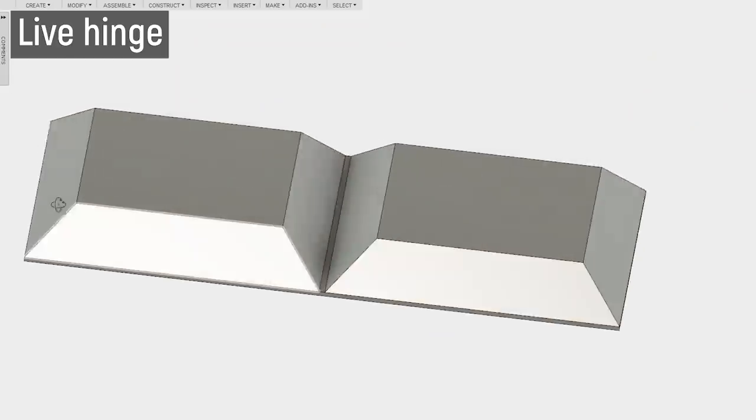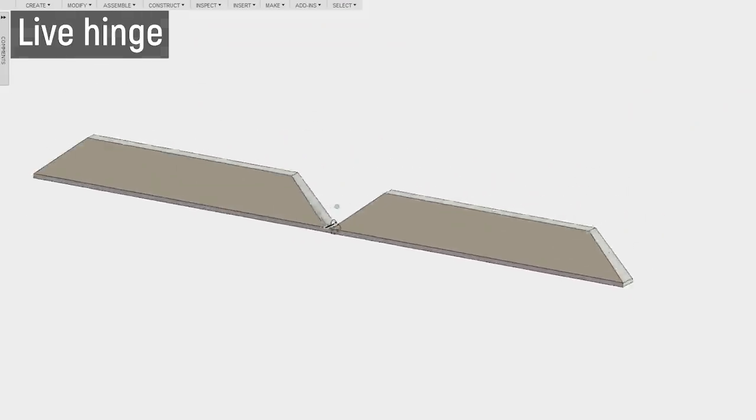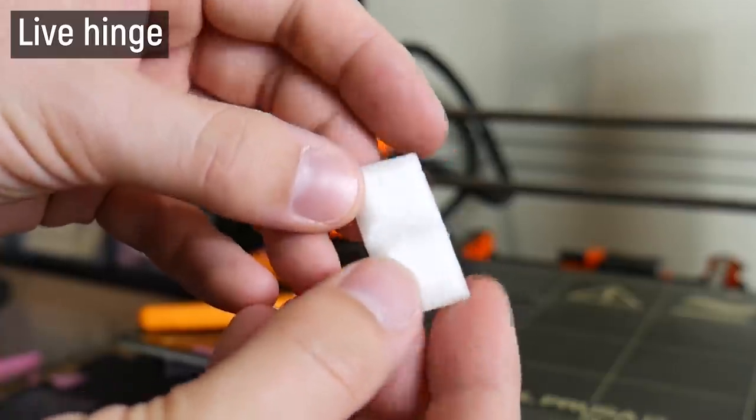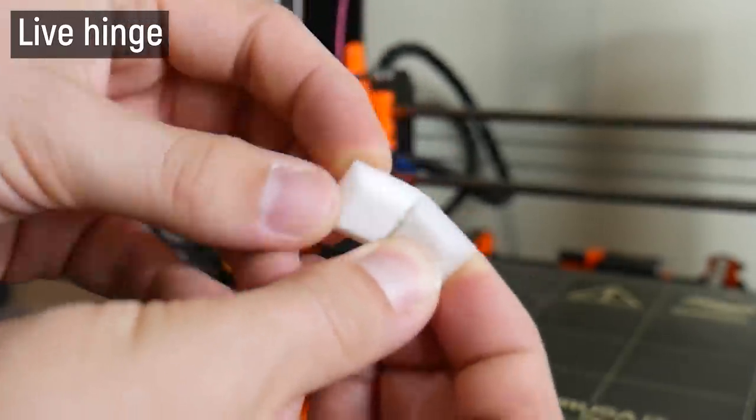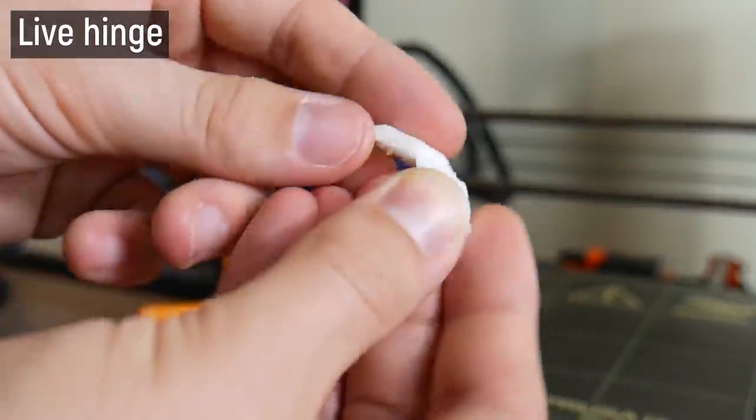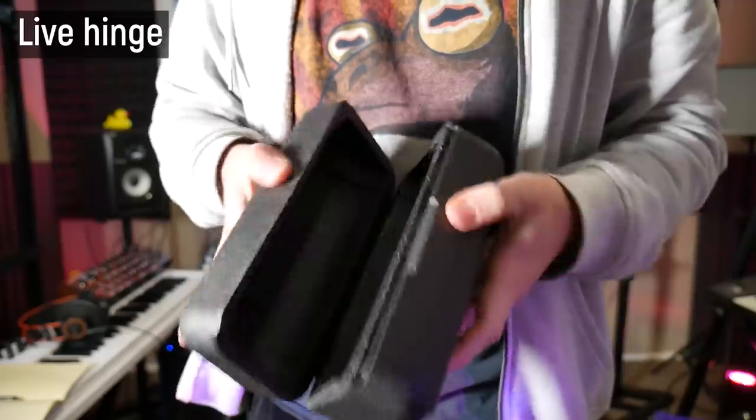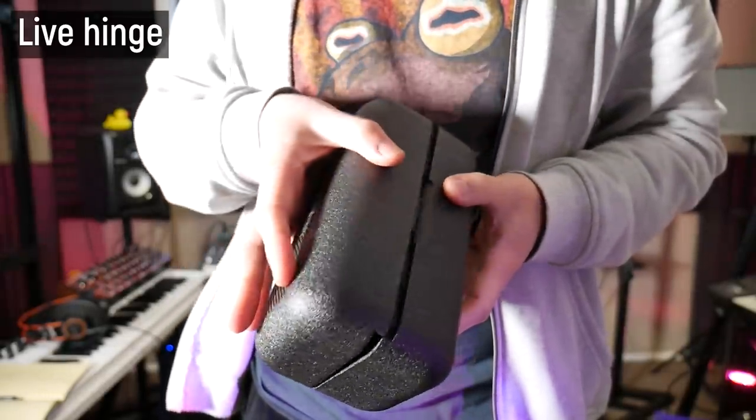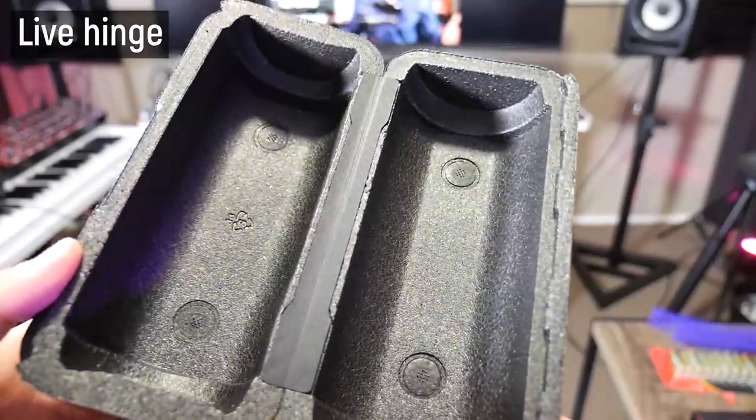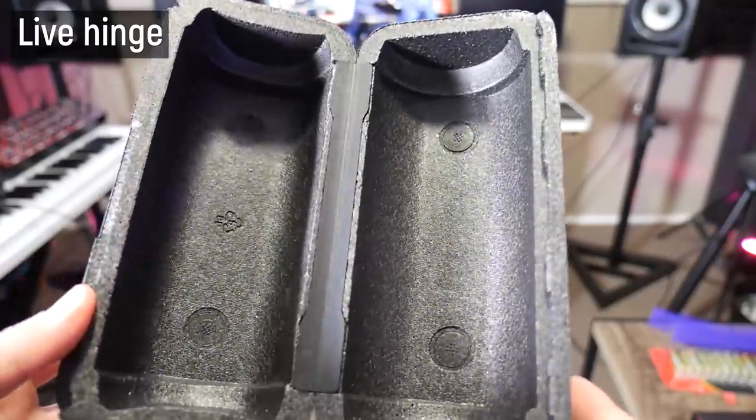And the third way is to create a live hinge, that is a piece of thin plastic between two details that actually can bend. And live hinges are used in all sorts of products and packaging in the real world. For example, this box from a Bluetooth speaker uses a large live hinge in the back there of thin plastic and it creates this really lightweight, cheap, durable hinge.